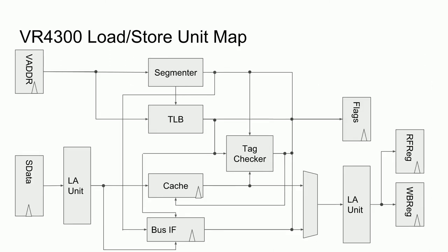Before ending the video, I want to leave you with a map of the VR4300's load store unit. This diagram shows all relevant components required to execute the load store instructions in the VR4300. On the left are clocked registers with data from the previous pipeline stage, and on the right are registers for the next pipeline stage. All signals must propagate from the left virtual address register to the right registers within a single cycle, for both loads and stores. Most of these components operate in parallel. The flags register on the right represents exception and stall flags needed by the execution core to determine if the exception vector should be jumped to, or if the pipeline should stall for a cache refill or bus read.